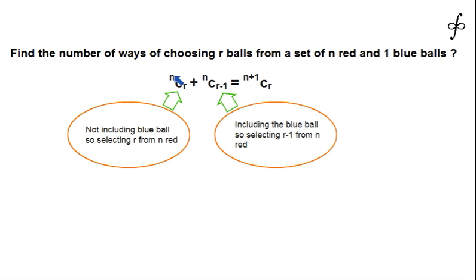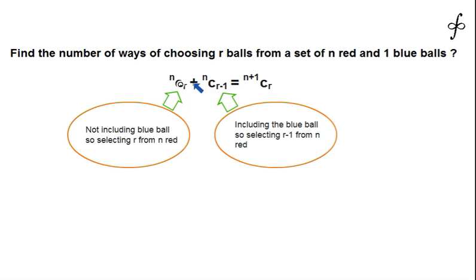So we have nCr — selecting r from n red balls — plus nC(r-1) — selecting r-1 from n red balls. These are the only two possible cases: either we take the blue ball or we don't. The addition of these two cases must equal n+1Cr, hence proving the identity nCr + nC(r-1) = n+1Cr.